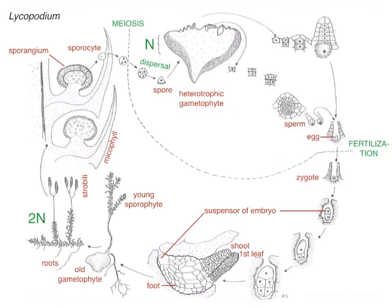That heterotrophic gametophyte can then grow archegonia and antheridia. So there we have an archegonium, and that archegonium has canal cells and neck cells. And we have an antheridium, and that antheridium has jacket cells and spermatogenous tissue inside that then grows up to be sperm. So that was the homosporous life cycle.